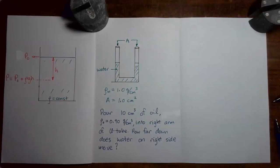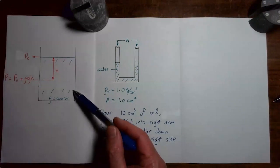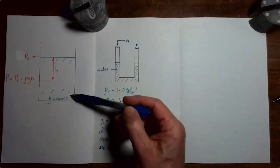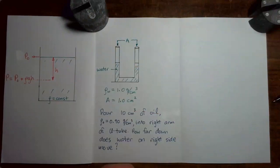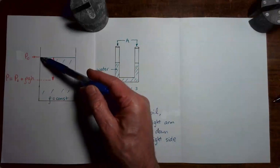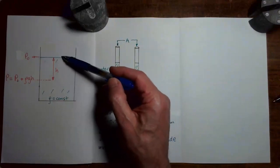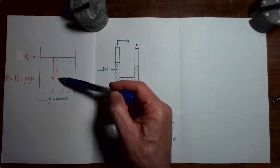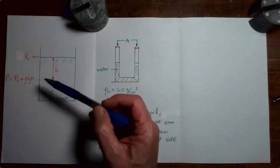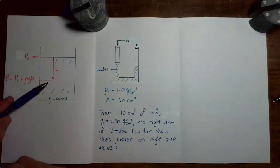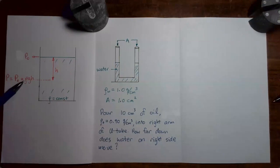In the previous video, I derived the formula which gives the pressure as a function of depth in a liquid with a constant density. The pressure at depth h beneath the surface equals the pressure at the top surface plus the density of the liquid multiplied by the freefall acceleration multiplied by the depth beneath the surface.